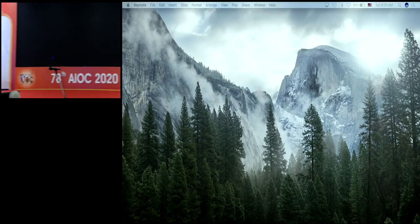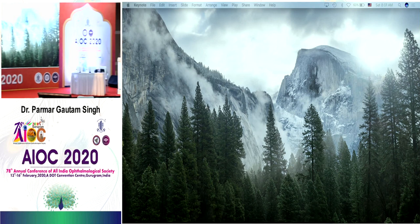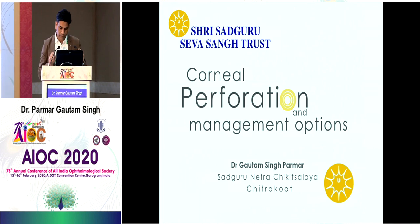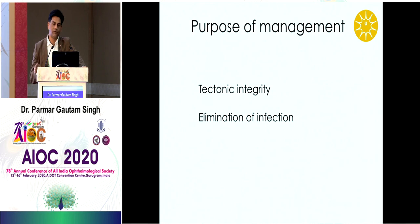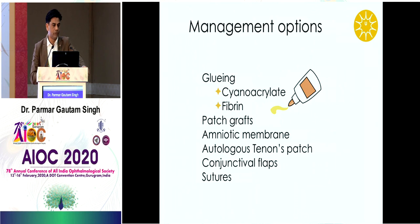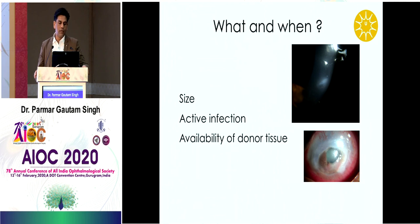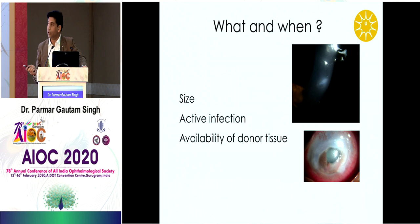Good morning everyone. I will talk on corneal perforations and their management with special highlights on patch grafts. Perforations occur due to infection — bacterial, fungal, viral — autoimmune etiology, or trauma. The purpose of management is to achieve tectonic integrity and eliminate infection simultaneously. Management options include: cyanoacrylate or fibrin glue, patch grafts, amniotic membrane, autologous Tenon's patch, conjunctival flaps, and suture sealing. The choice depends on the size of perforation — a small self-sealing entry wound needs no intervention, while a bigger perforation requires a patch graft.